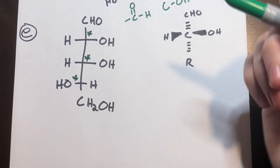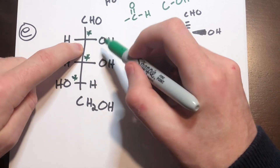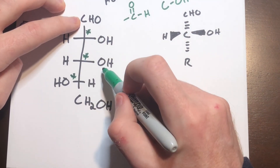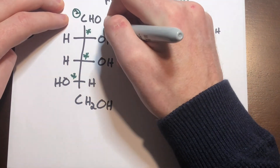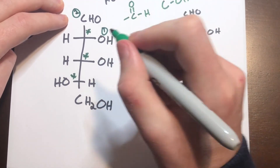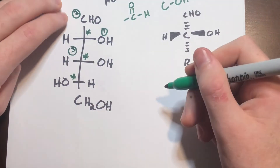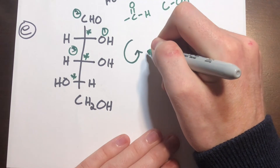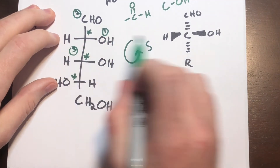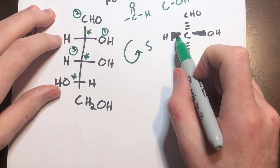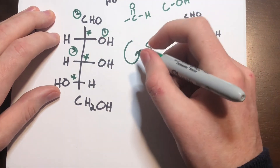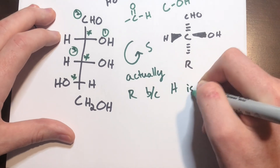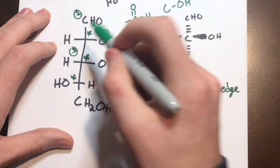For the first center: hydrogen is definitely lowest priority, OH is definitely highest priority. We have a carbon bound twice to oxygen — the aldehyde carbon — versus a carbon bound once to oxygen. So the aldehyde group is second priority, and the carbon chain down is third. Looking at one, two, three — counterclockwise, that looks like S. But the hydrogen is on the horizontal, meaning it's a wedge, so we flip it — this position is actually R.